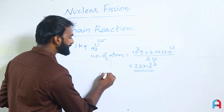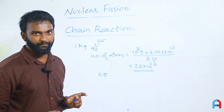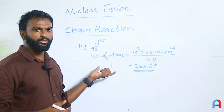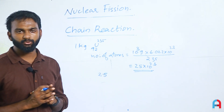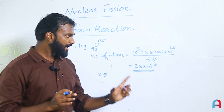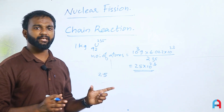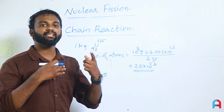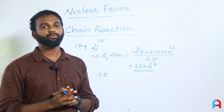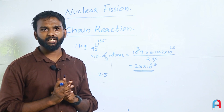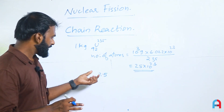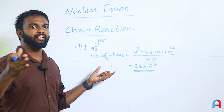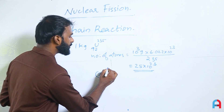Each fission event releases approximately 2.5 neutrons. Taking 2.5 as a round figure, the number of neutrons after n generations follows the rate 2.5^n. At the end stage, the total number of neutrons produced is 2.5^n, where n is the generation number.